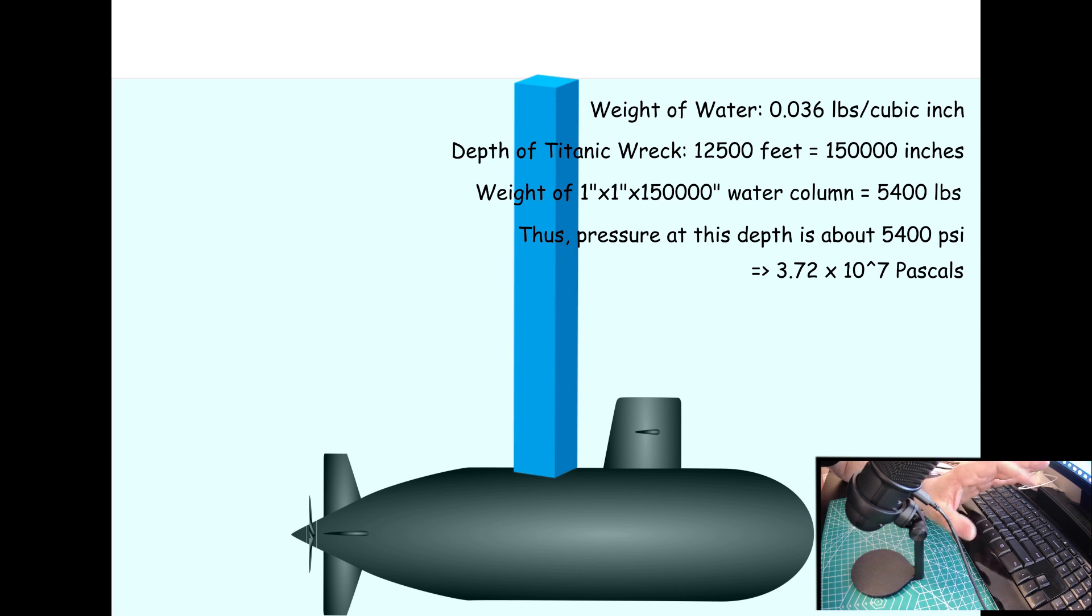So, that's 5,400 pounds per square inch acting on the surface of the vessel. Now, imagine those columns of water completely covering the entire surface area of the sub. It's a tremendous amount of force the vessel needs to be designed for.